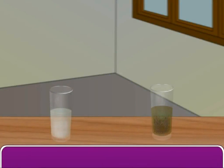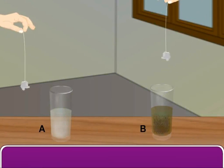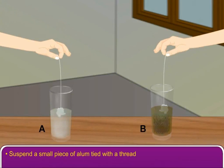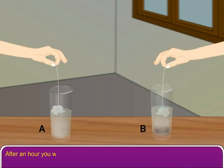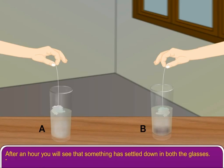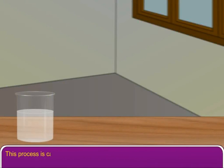Activity 1. Take two glasses marked as A and B. Fill glass A with tap water and glass B with water from a pond. Suspend a small piece of alum tied with a thread in each of the glasses. Keep both the glasses undisturbed for some time. After an hour, you will see that something has settled down in both the glasses — these are the impurities in the water. Now slowly tilt the glass and pour out the clear water into another glass. This process is called decantation.